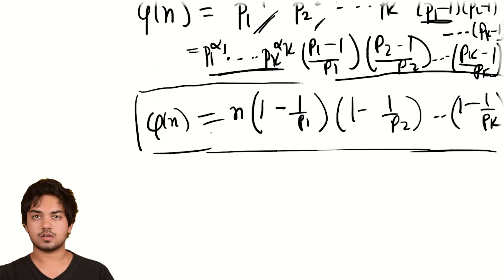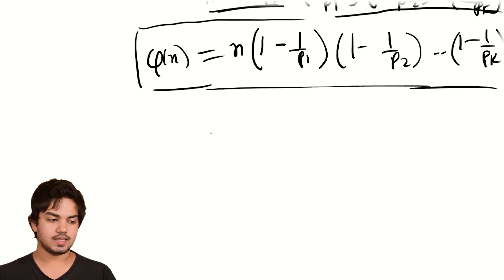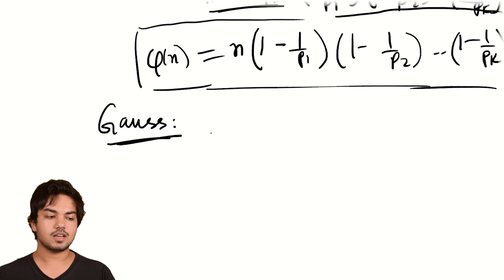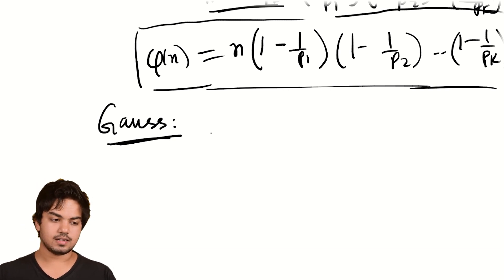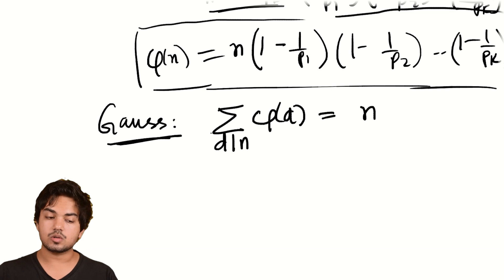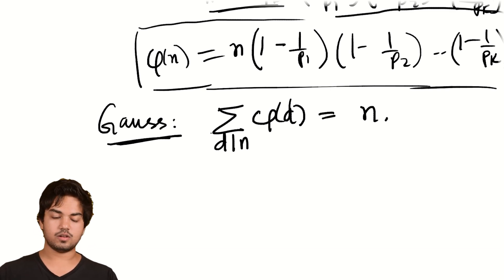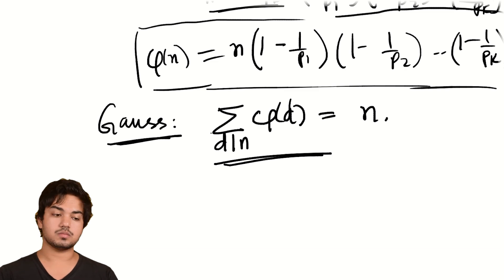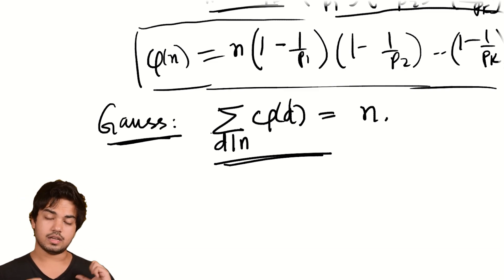One last beautiful result attributed to Gauss states that the sum of φ(d) over all divisors d of n equals n. It's a very striking result — I won't prove it now, but I'll put it in your head so you can think about it. Next class we'll look at sums like these, Möbius inversion, and many other exciting aspects of the theory of multiplicative functions, which is very rich. That's all for today — thank you very much for watching, and I'll see you in the next class.